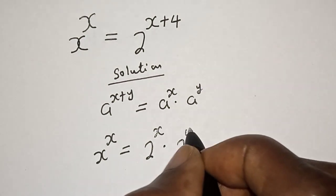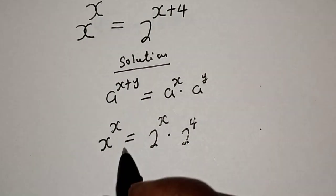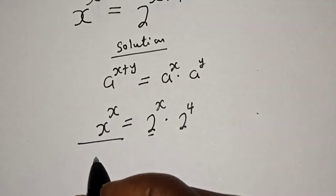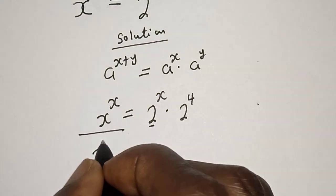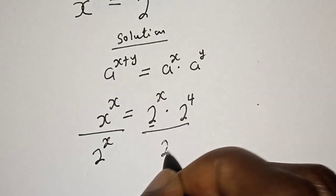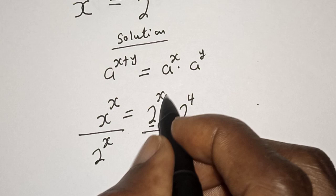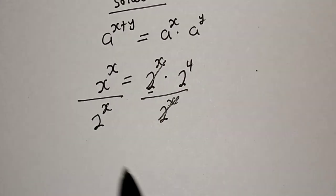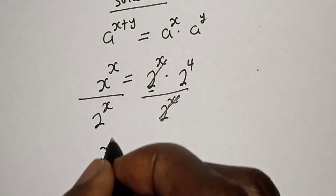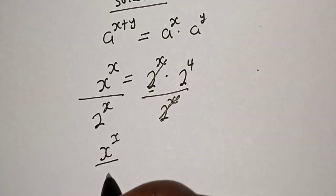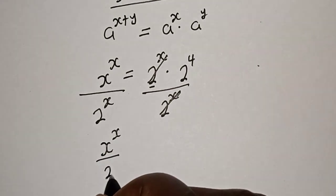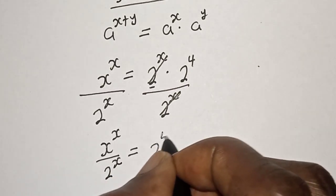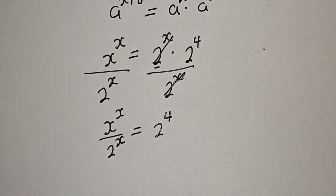Now let's divide both sides by 2 raised to power s. Divided by 2 raised to power s — this will cancel. We have s raised to power s over 2 raised to power s is equal to 2 raised to power 4.